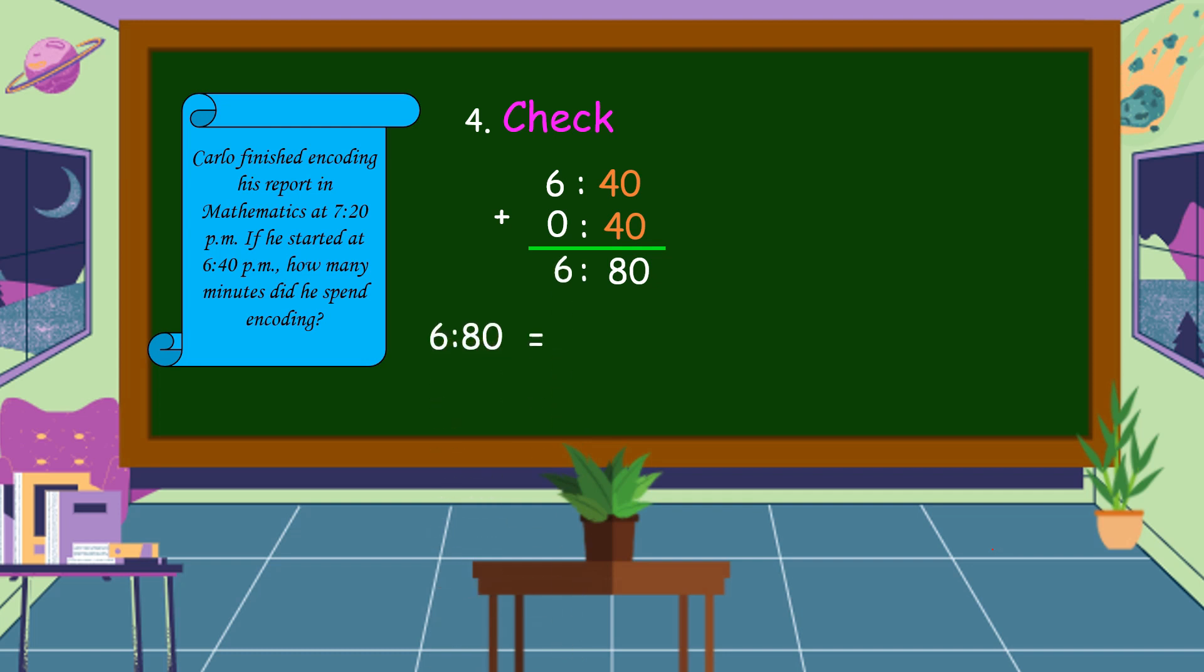6:80, this is equal to 7:20 p.m. How it becomes 7:20 p.m.? 6:80 is equal to 6 hours plus 60 minutes plus 20 minutes. As we all know that 60 minutes is equal to 1 hour. 6 hours plus 1 hour, that is 7 hours, then plus 20 minutes. Or it is 7:20 p.m.